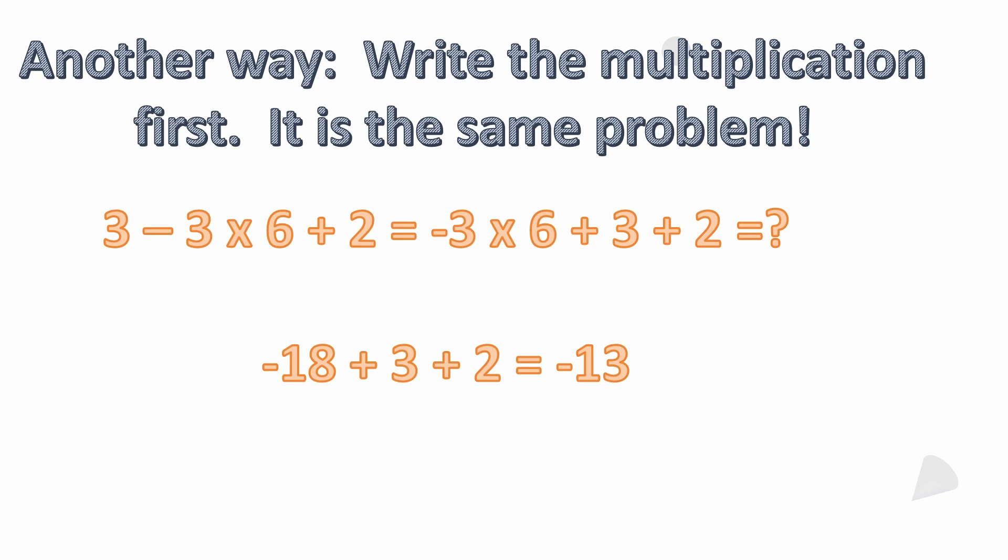Like in this example here of the same problem, I've rewrote it as negative 3 times 6 plus 3 plus 2. It's the very same thing as saying 3 minus 3 times 6 plus 2. So if you do that and you move the multiplication to the front, you take minus 3 times 6, you get minus 18. Minus 18 plus 3, remember what that is, minus 18 plus 3 gets you to minus 15. And then you add another 2 that gets you to minus 13. So the answer again is minus 13.